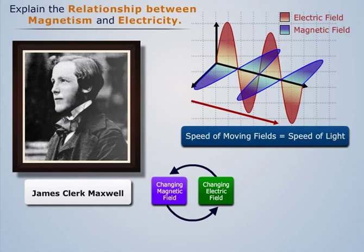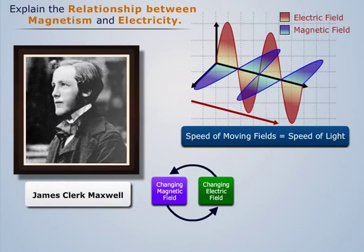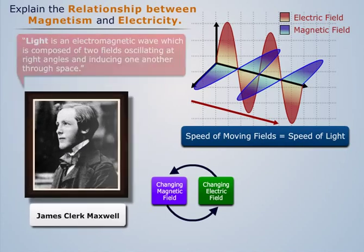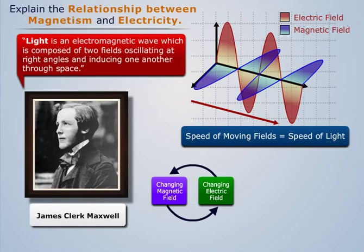To conclude this line of reasoning, Maxwell said that light is an electromagnetic wave, which is composed of two fields oscillating at right angles and inducing one another through space.